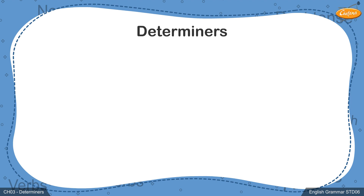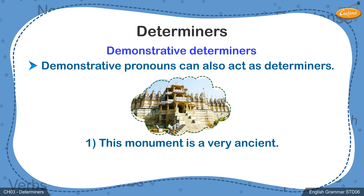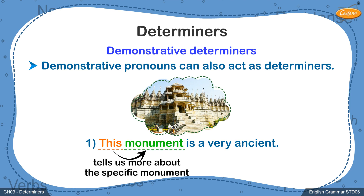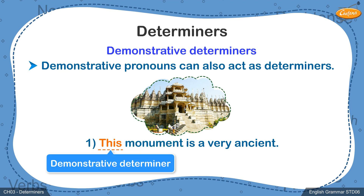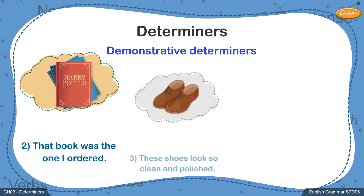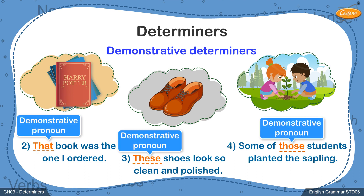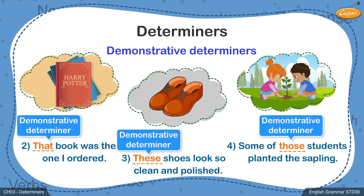Next, we will be learning about demonstrative determiners. To understand the word demonstratives, let's read the examples given on the screen. In the first sentence, the word 'this' tells us more about the specific monument being spoken about. It points at or shows the noun 'monument' specifically and therefore it is called a demonstrative determiner. Similarly, in examples 2, 3 and 4, the words 'that', 'these' and 'those' refer to specific nouns such as books, shoes and students and are demonstratives or demonstrative determiners.